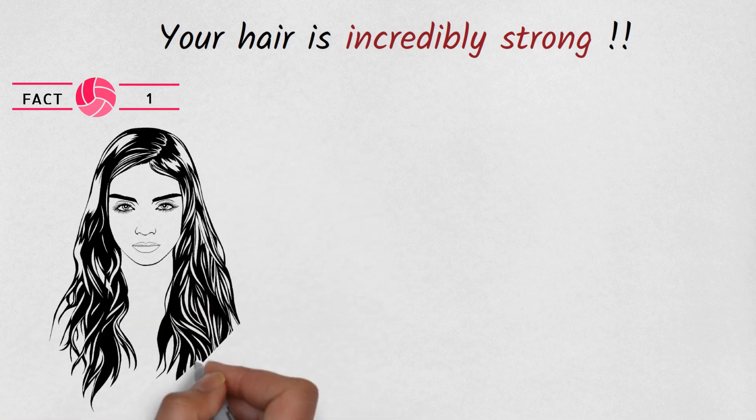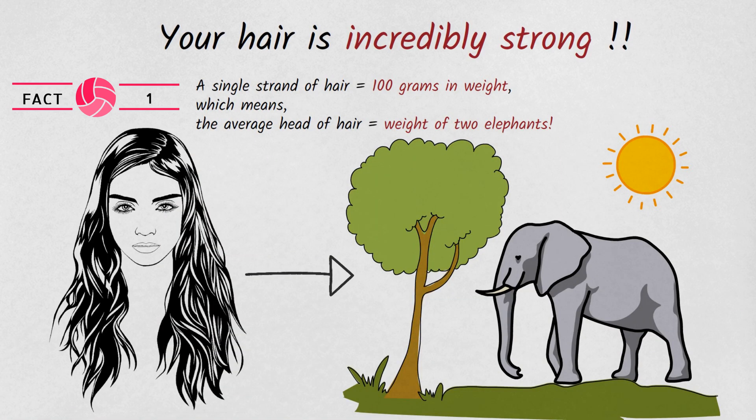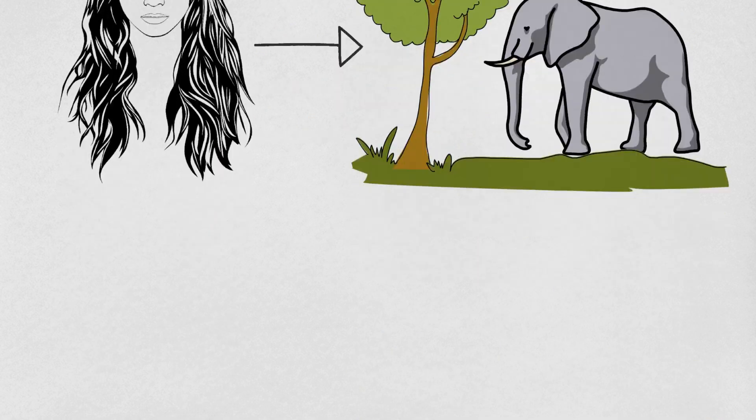Fact number 1. Your hair is incredibly strong. A single strand of hair can support up to 100 grams in weight, which means the average head of hair can support the weight of two elephants.